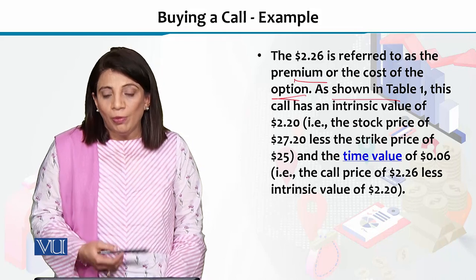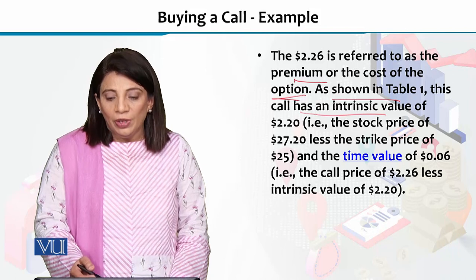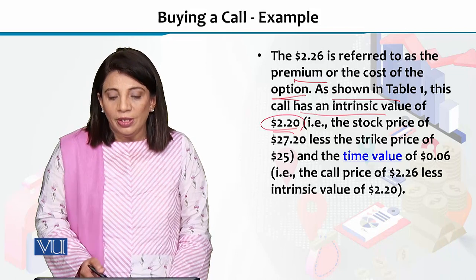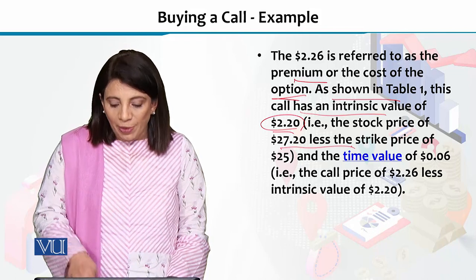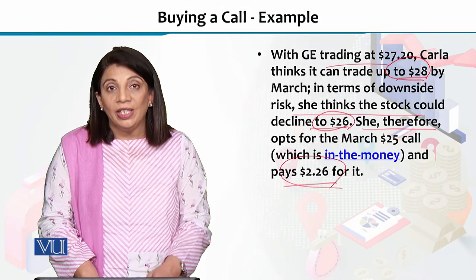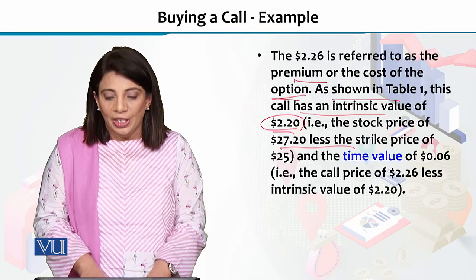Table میں دیکھیں تو GE کی stock کے لیے جو option lock کیا ہے اس کا intrinsic value 2.20 ڈالر ہے۔ strike price 27 ڈالر پر lock کی ہے اور time value 0.06 ڈالر ہے۔ اس contract کا premium ادا کرنا ہے، اور intrinsic value 27 پر 0.20 ڈالر ہے۔ ان تمام چیزوں کو مدِ نظر رکھ کر وہ حساب لگائے گی کہ اسے کتنا فائدہ ہوگا۔